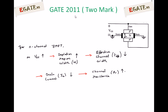For an n-channel JFET, VGS is always negative. As VGS increases negatively, the depletion region width increases. Whenever you apply negative voltage to the gate, both P-N junctions — one on each side of the channel — become more and more reverse biased. Under reverse bias, the depletion region width is larger, so more reverse bias means more depletion region width. As VGS increases negatively, the depletion region width W of both PN junctions increases.